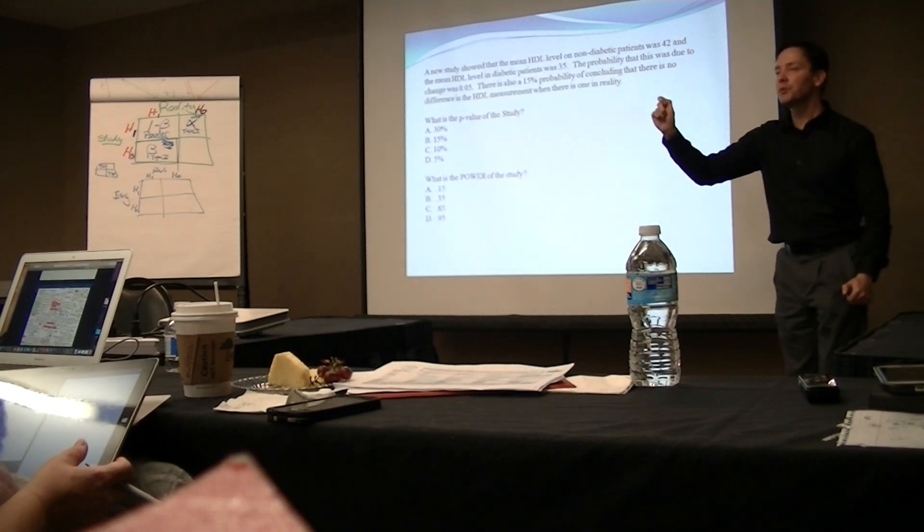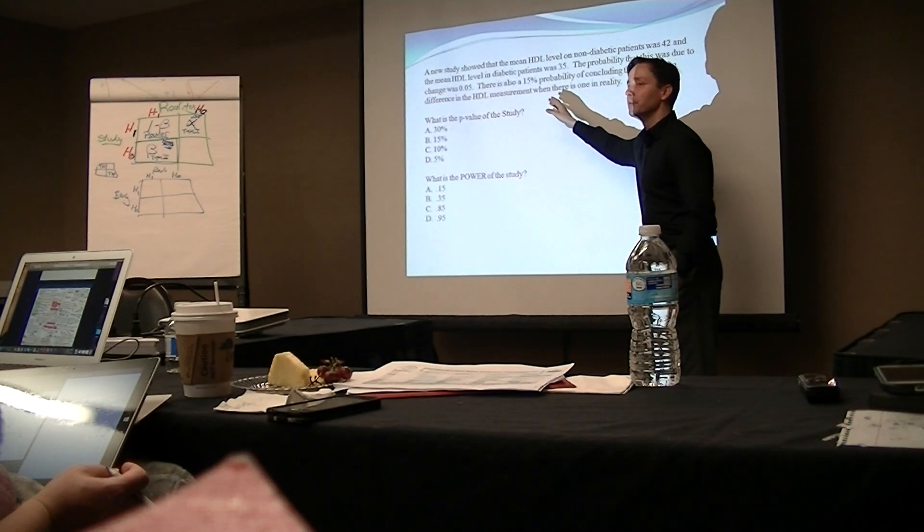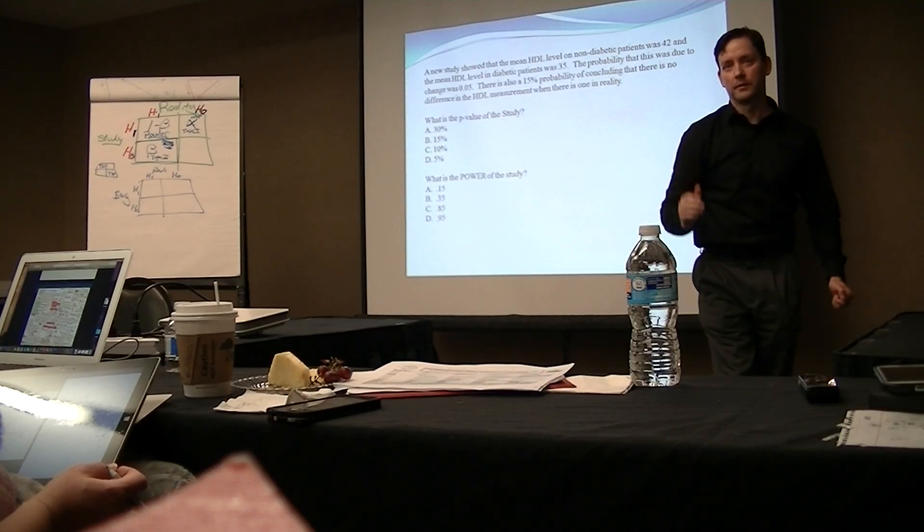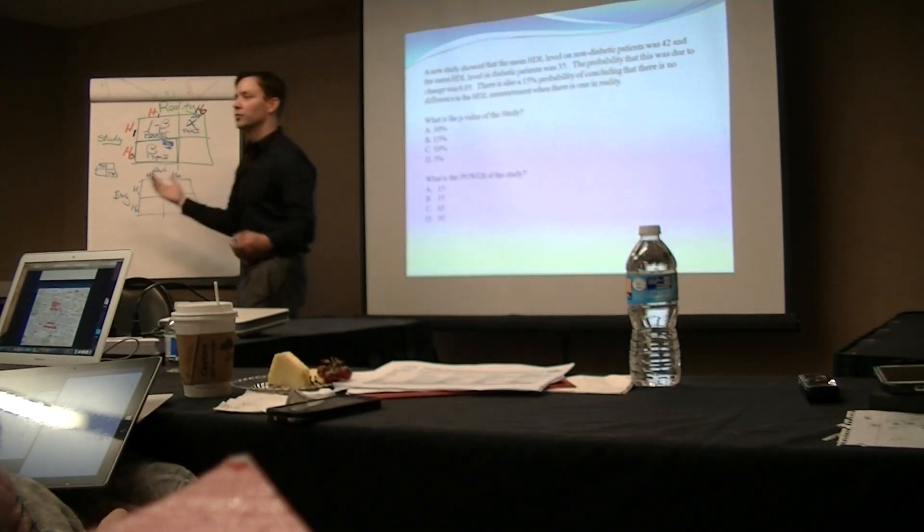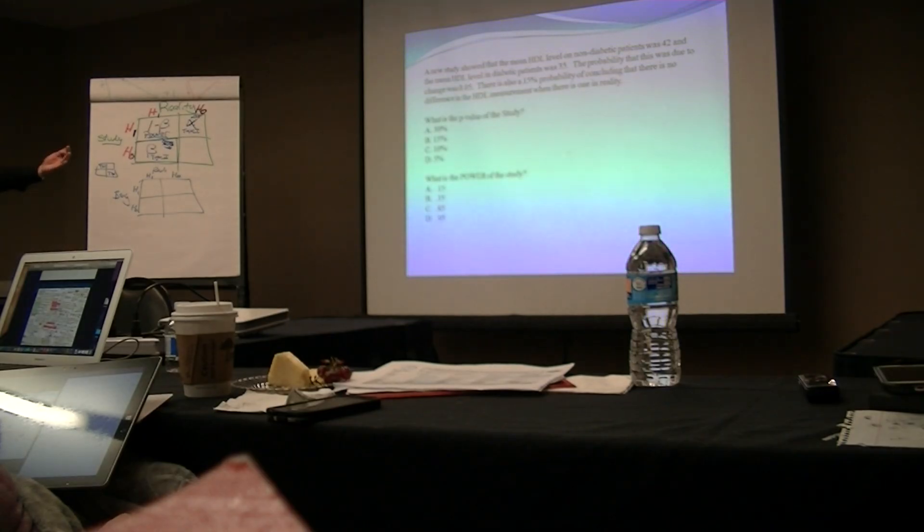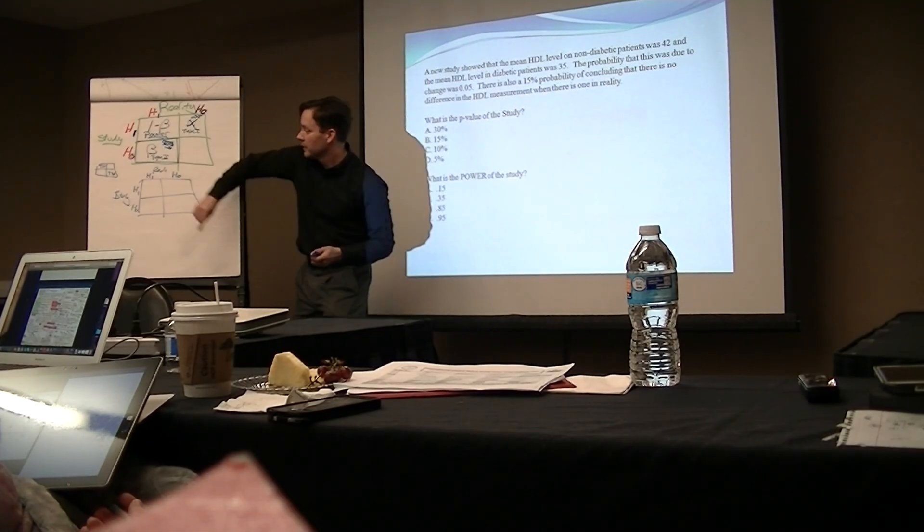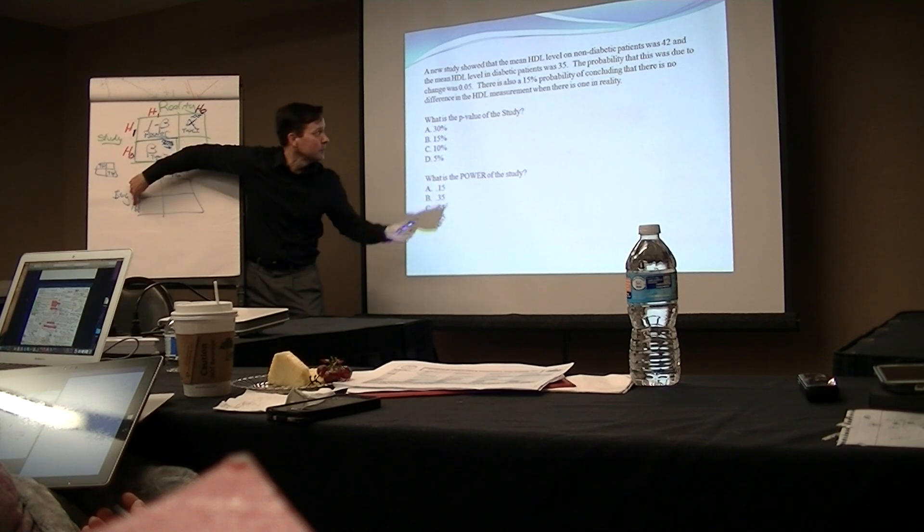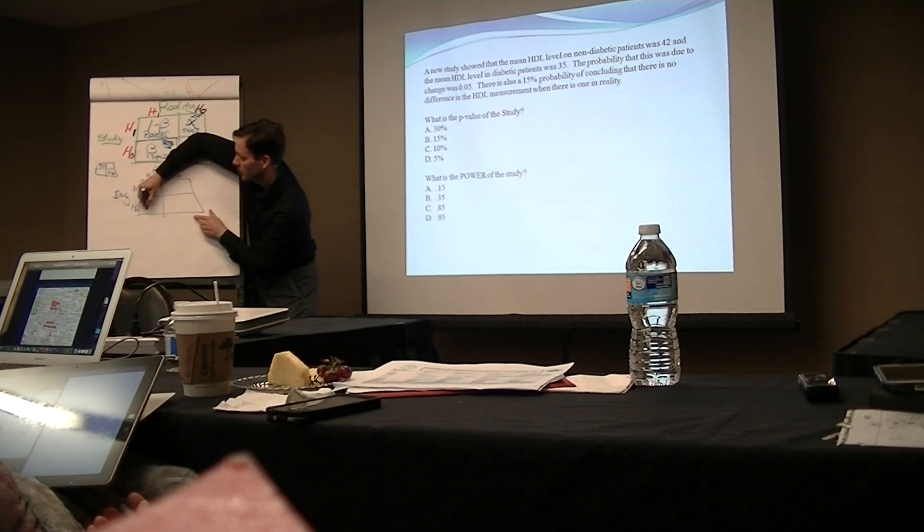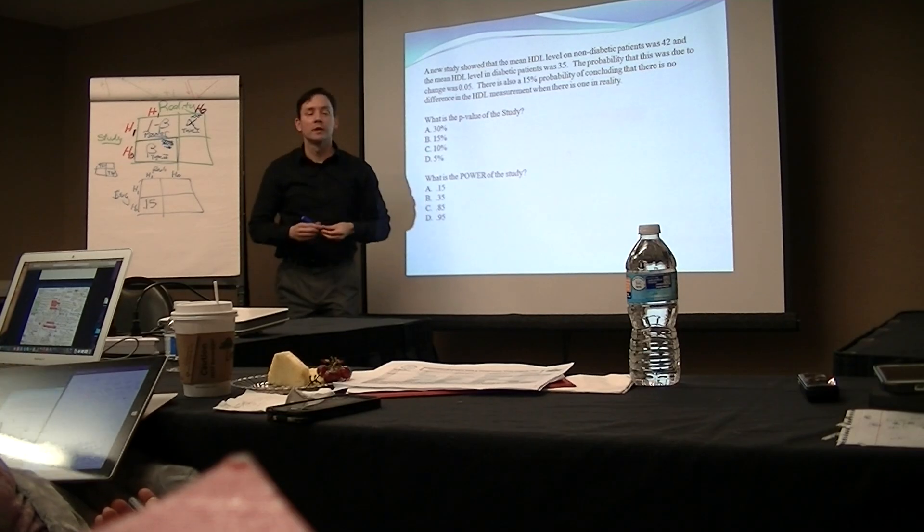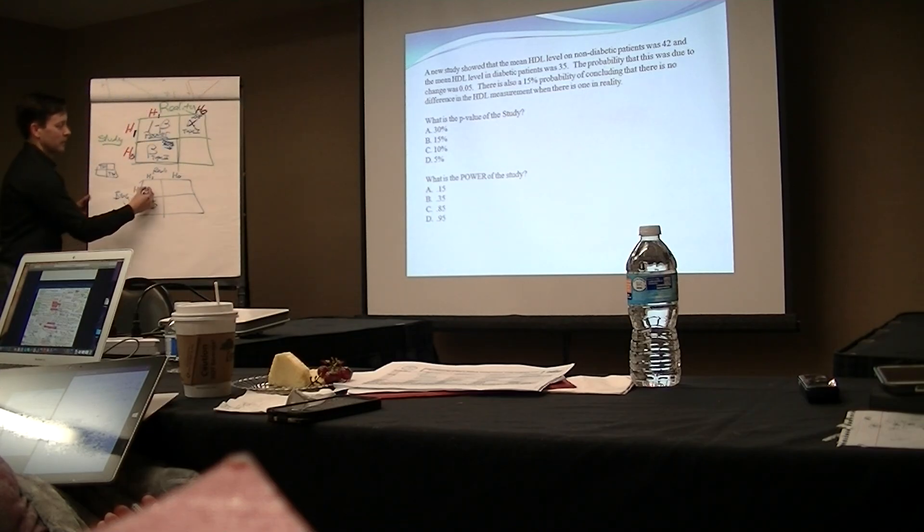There is a 15% probability of concluding that there is no difference in the HDL measurement when there, in reality, there is one. So this 15% is what? It's beta. They gave it to us in words. There is also a 15% probability of concluding there is no difference when there really was one. 15% or .15. Now, what was the question? What's the power of the study? 1 minus that is .85.